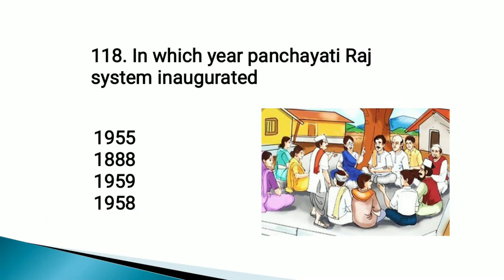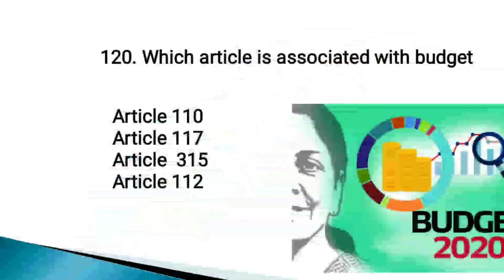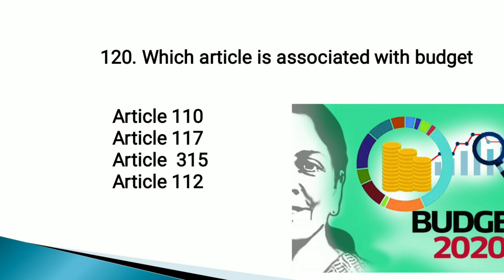In which year was the Panchayati Raj system inaugurated? 1959. Which article cannot be suspended by any order in the case of emergency? Articles 20 and 21. Which article is associated with the budget? Article 112.